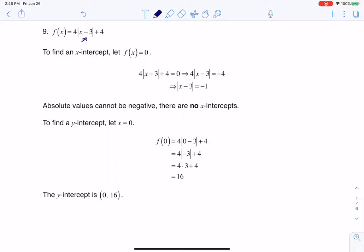I can see because there was a minus 3 inside the grouping symbols, I'm going to shift right by 3 units. I can see because this plus 4 is outside the grouping symbols, I'm going to shift up by 4 units, and then because of this 4 here, I'm going to stretch vertically by a factor of 4.